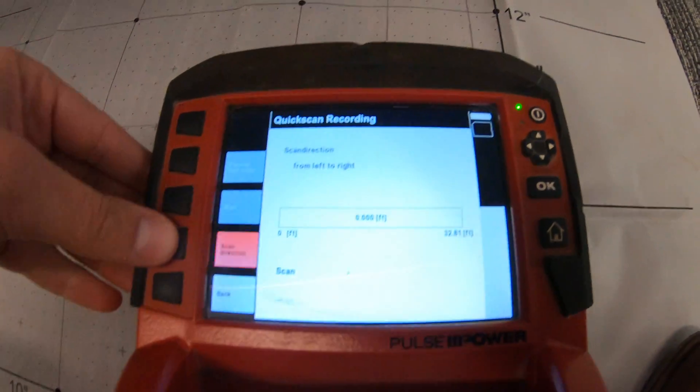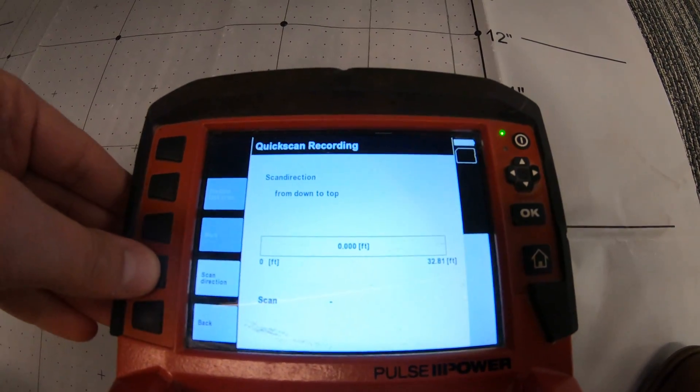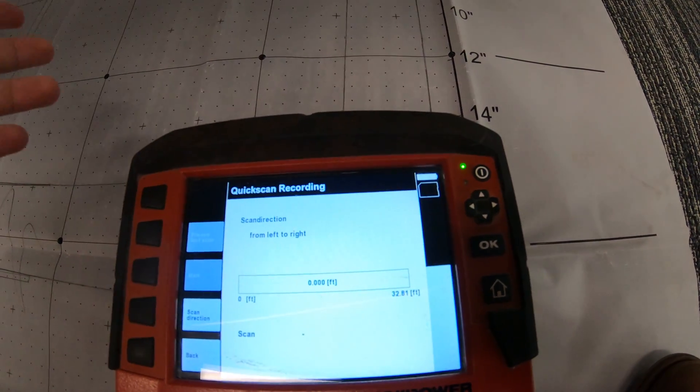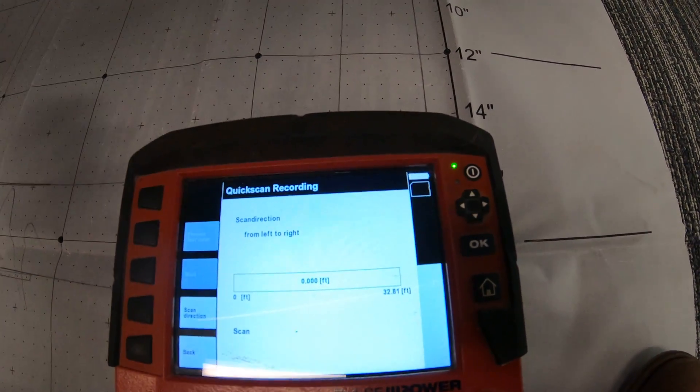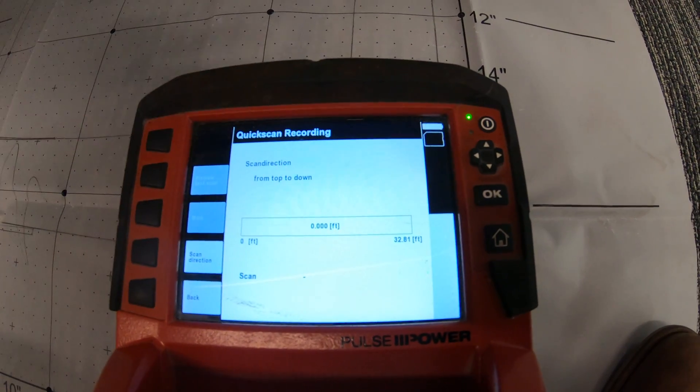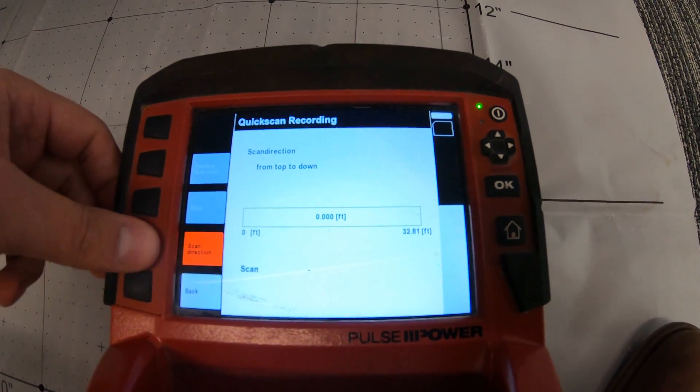I can go here and change that scan direction if I wanted to, and that's just so that you can know which way the scan is going. Even though on the software it's going to read left to right, you can remind yourself, okay, I know it's going left to right on this scanner, but in reality I'm reminding myself that I went top down or whatever direction you went.